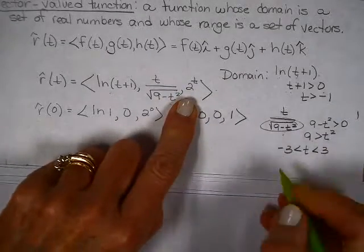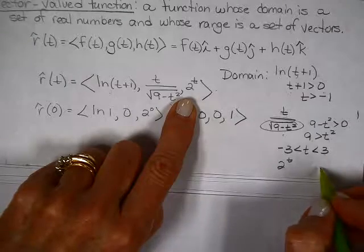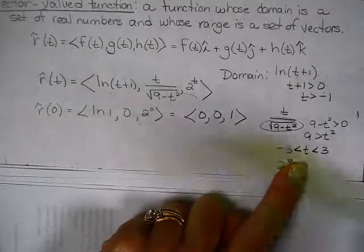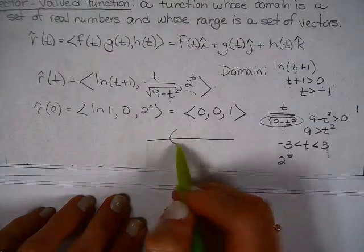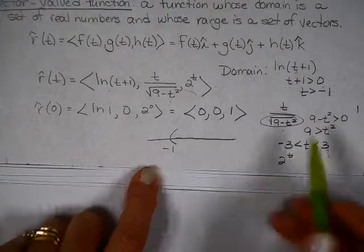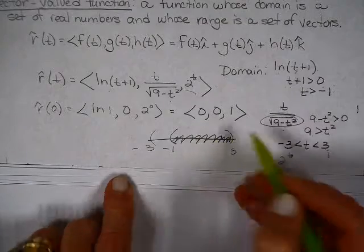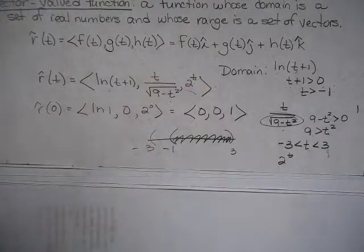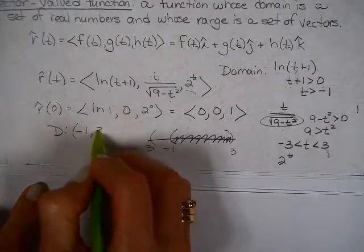And then when you look at this last piece, if you look at 2 to the t power, t can be anything here, so it doesn't matter right here. So your job for the domain of this entire vector function is to put these two things together. This one says that t has got to be greater than negative 1. This piece said that t had to be bigger than negative 3 and less than positive 3, so actually this piece right here is what is going to be your function domain.